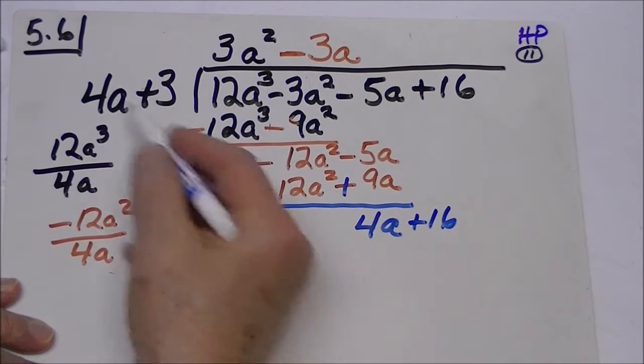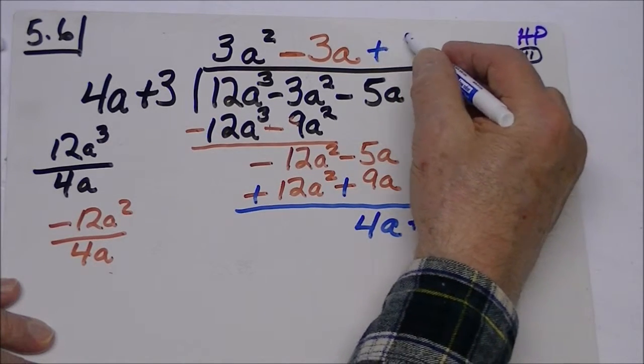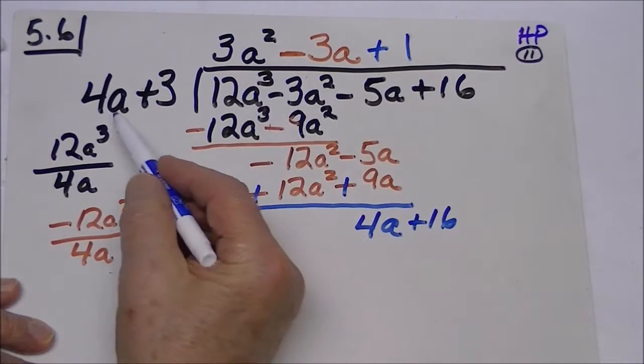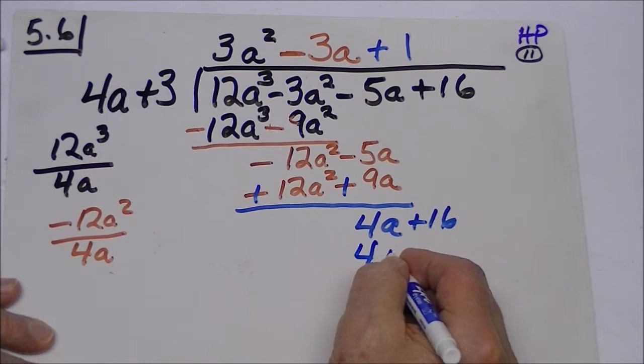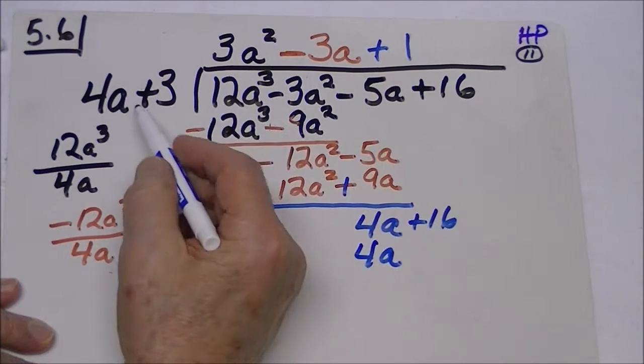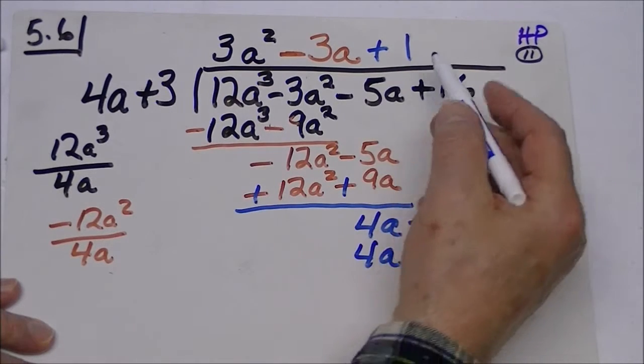Now 4a divided by 4a is just a 1, so now we multiply 4a times 1 is 4a. 3 times 1 is 3.